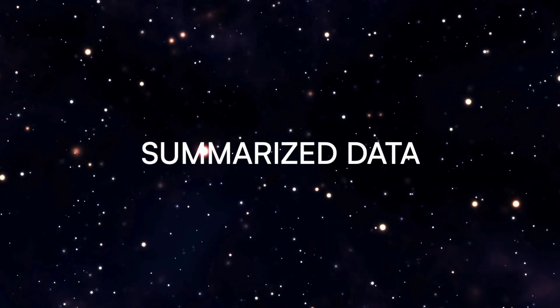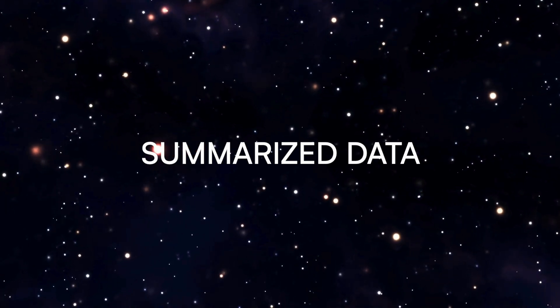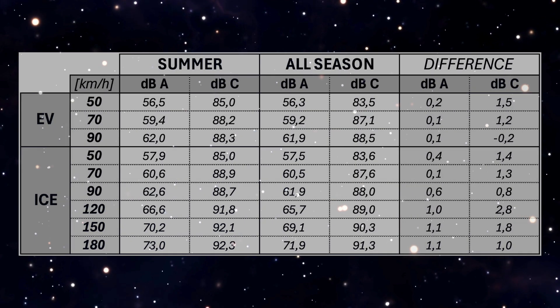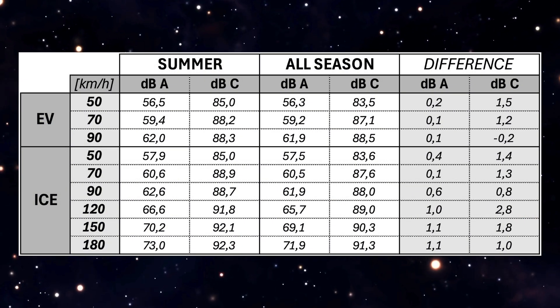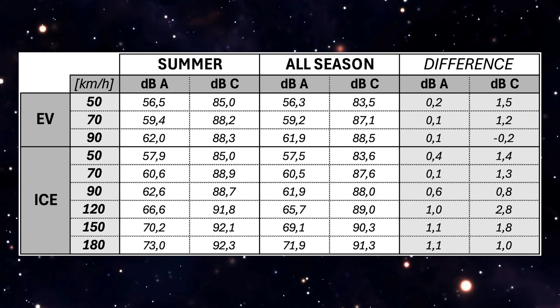To be more specific, let's review the summarized results in a table. The dB A weighted results show close numbers with an average difference of just 0.5 decibel.